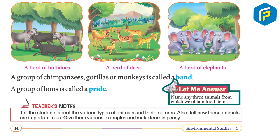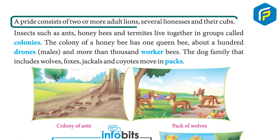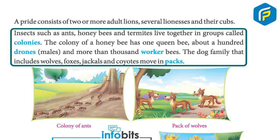A pride consists of two or more adult lions, several lionesses, and their cubs. Insects such as ants, honeybees, and termites live together in groups called colonies. The colony of a honeybee has one queen bee, about a hundred drones (males), and more than a thousand worker bees.